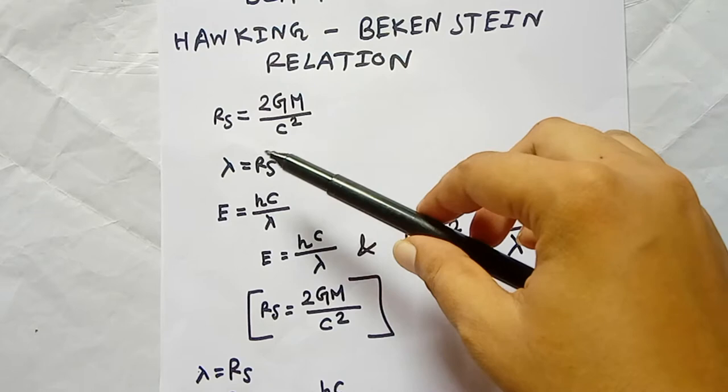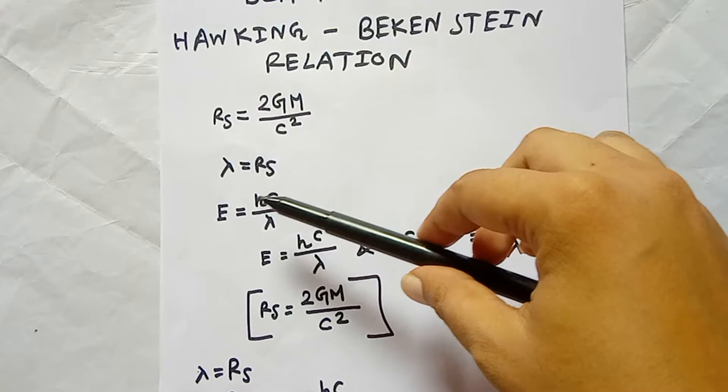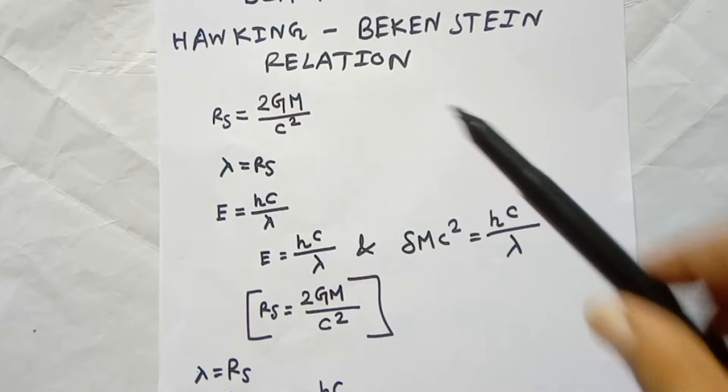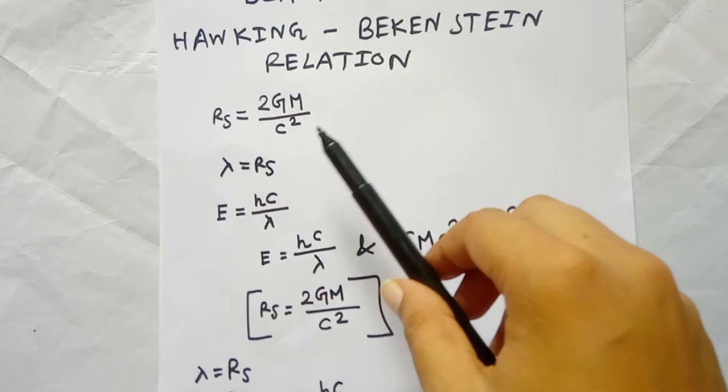Another thing is the quantized energy level equal to hc divided by lambda. We know that E equals h times frequency, and also E equals hc divided by lambda.